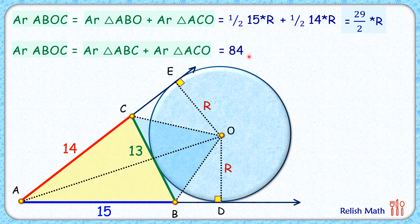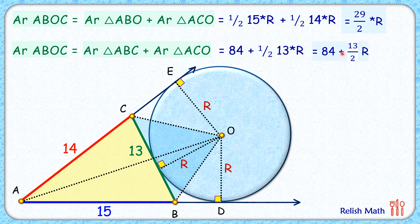For the blue triangle BOC, from point O we drop a perpendicular to the tangent, so its area is half of base times height, which is half of 13 times R. Therefore, the total area of the quadrilateral is 84 plus 13R/2.